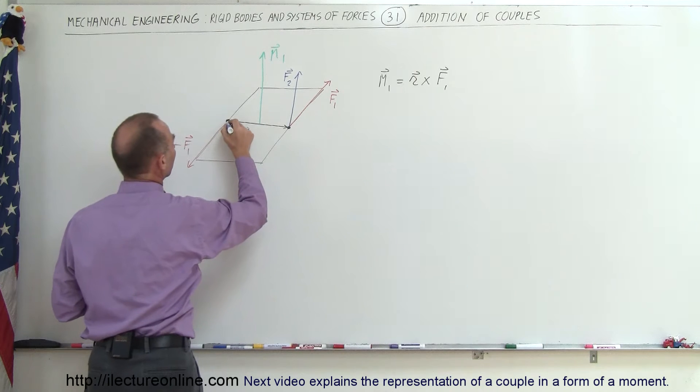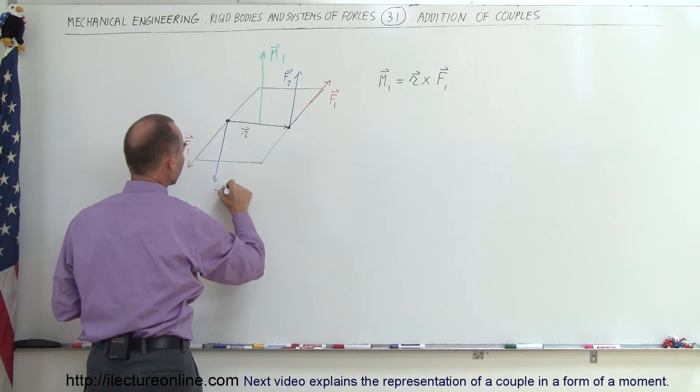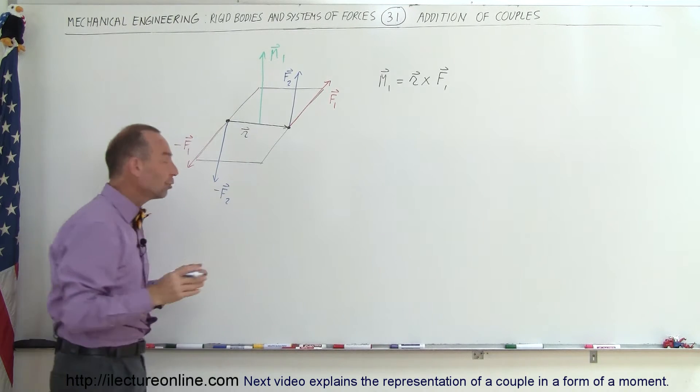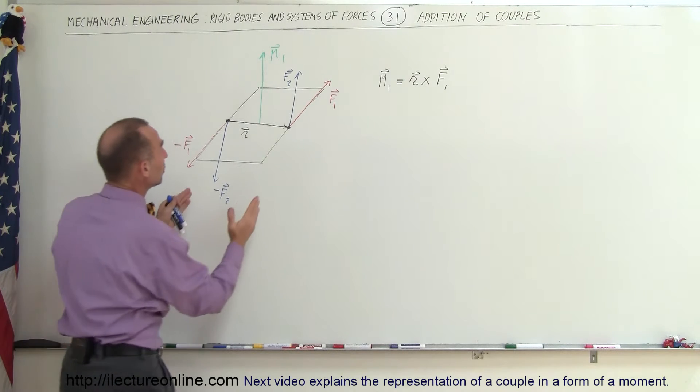And let's call the equivalent vector in the opposite direction. Let's call this negative F2. And so you can see that F2 and negative F2 also form a couple.